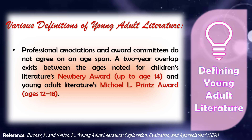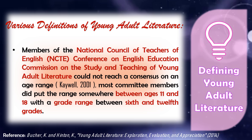Professional associations and award committees do not agree on an age span. A two-year overlap exists between the ages noted for Children's Literature's Newbery Award up to age 14 and Young Adult Literature's Michael L. Prince Awards, ages 12 to 18. Members of the National Council of Teachers of English Conference on English Education Commission on the Study and Teaching of Young Adult Literature could not reach a consensus on the age range. Most committee members did put the range somewhere between ages 11 and 18, with a grade range between 6th and 12th grades.